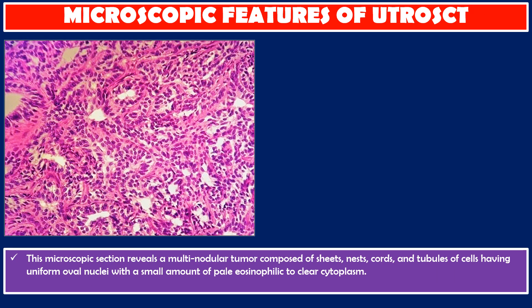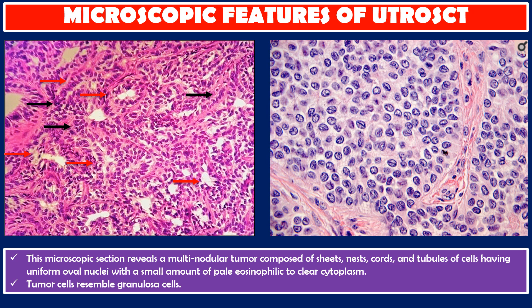This microscopic section reveals a multinodular tumor composed of sheets, nests, cords, and tubules of cells having uniform nuclei with a small amount of pale eosinophilic to clear cytoplasm. Tumor cells resemble granulosa cells. We can see some cells with a coffee bean appearance.